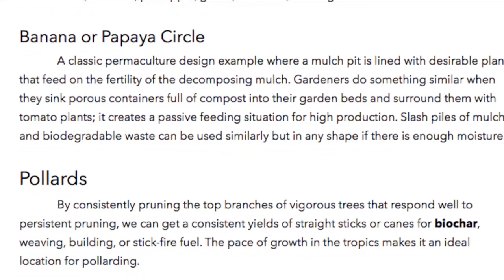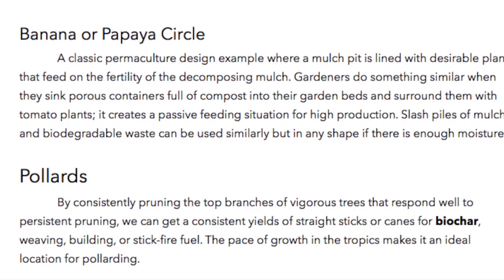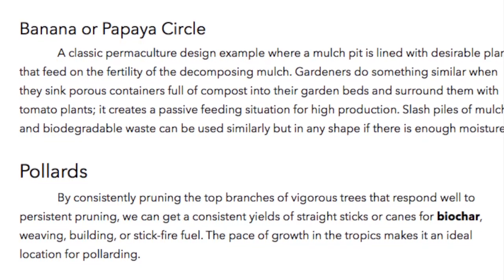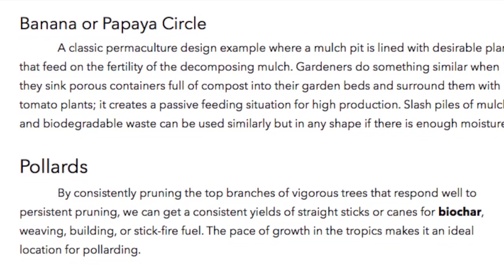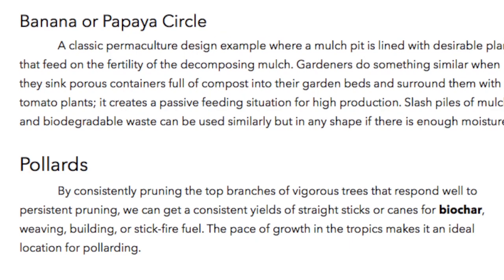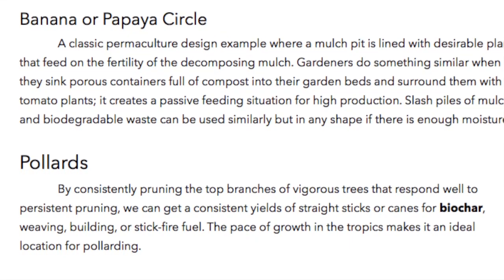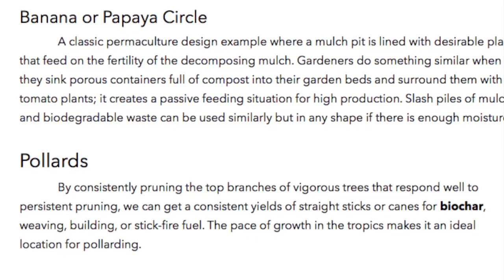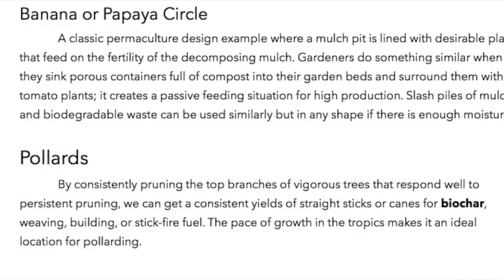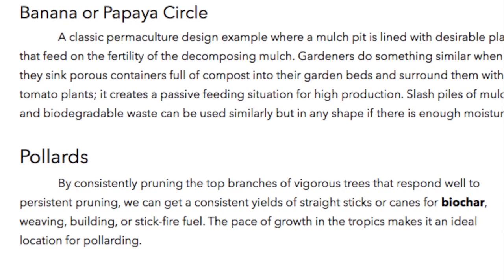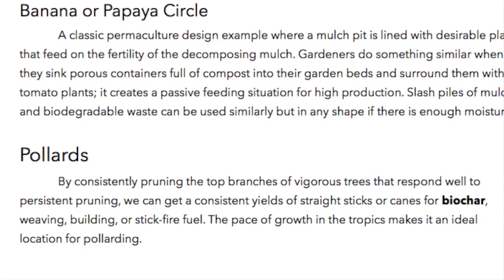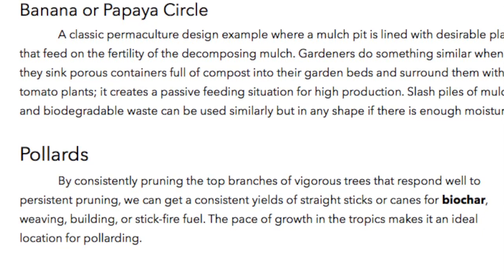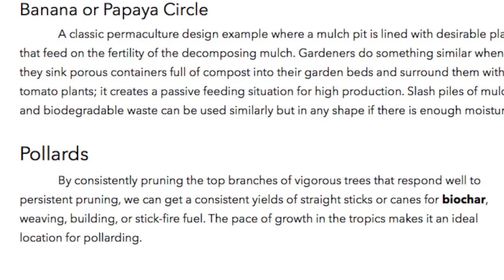Pollards. By consistently pruning the top branches of vigorous trees that respond well to persistent pruning, we can get a consistent yield of straight sticks or canes for biochar, weaving, building, or stick fire fuel. The pace of growth in the tropics makes it an ideal location for pollarding.